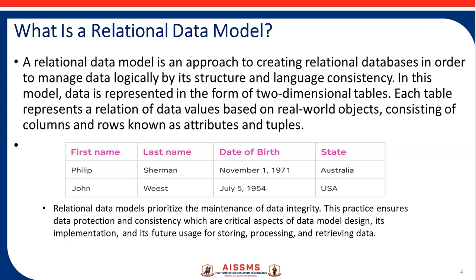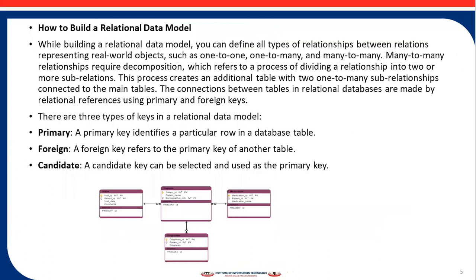These are the tables — four columns and three rows. The first row of column headers is known as attributes: first name, last name, date code, and step. These are the tuples. Relational data models prioritize the maintenance of data in this practice. This practice ensures data protection and consistency, which are critical aspects of data model design, its implementation, and its features of storing, processing, and retrieving data.